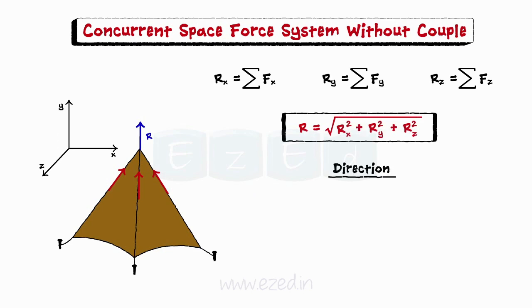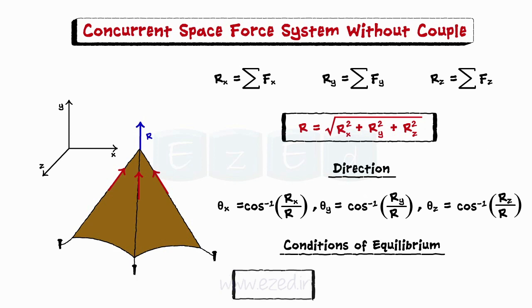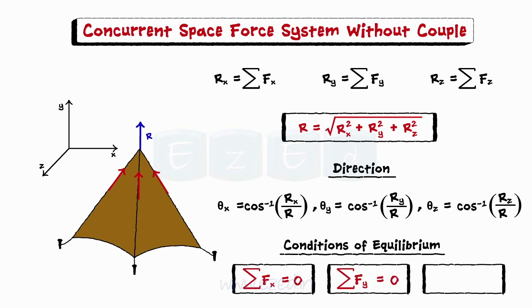The direction of the resultant can be represented by the three angles with the coordinate axis — theta x, theta y, and theta z — given by the formulae. The conditions of equilibrium of a concurrent force system are as follows: summation of all forces along all directions should be equal to zero.